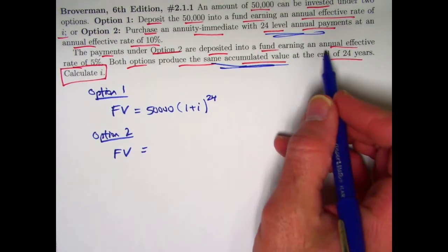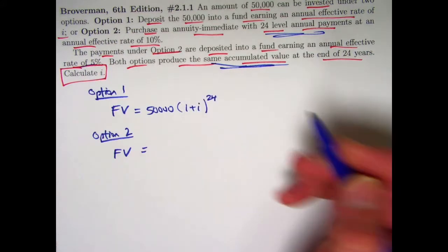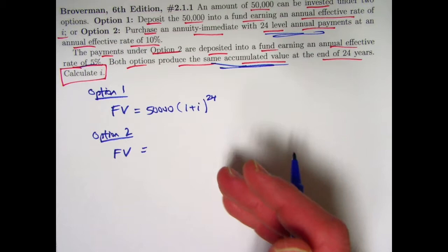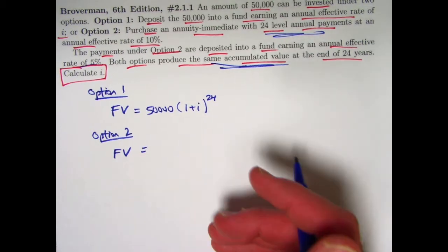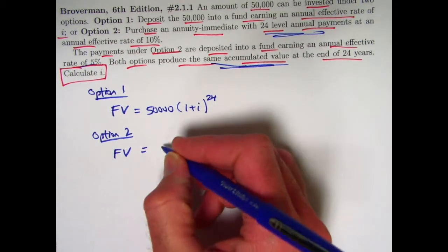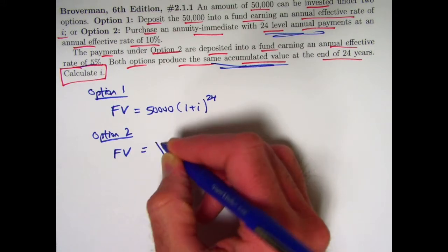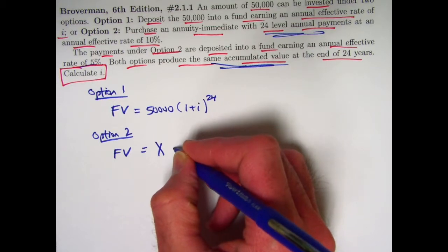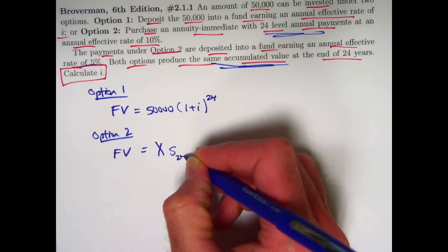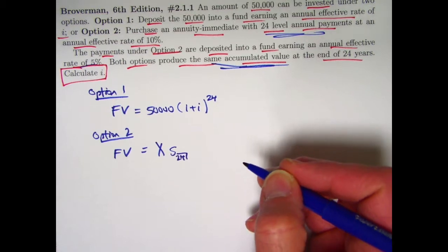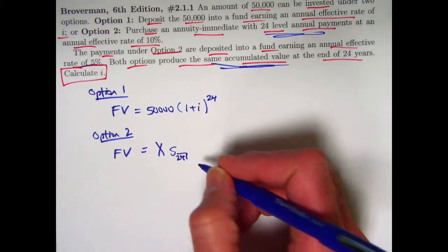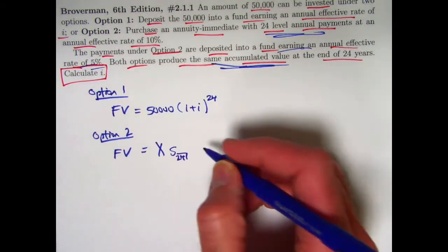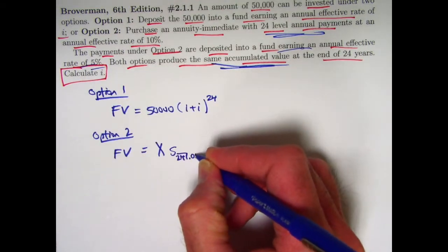And you're going to deposit that into a fund earning an effective annual rate of 5%. Evidently, at the end of every year for 24 years, and we want to find the future value of that annuity immediate. So, its future value, since the payments are X, symbolically can be represented as X times S24. And let's emphasize the interest rate, because there's a couple, three different interest rates going on here. The interest rate for that fund that we deposit that into is 5%. Put a 0.05 there.